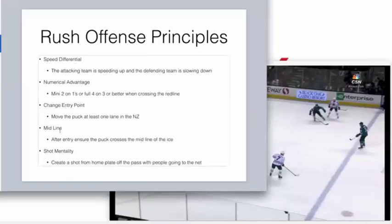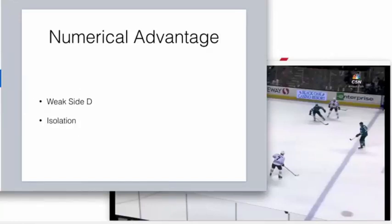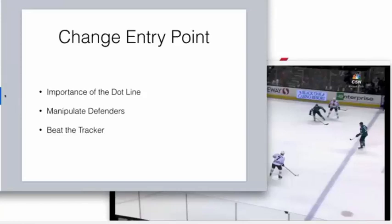So we talked about speed differential and using the stretch guy. Notice that when a guy takes off from the zone, we don't pass to him initially — his job is to push the D back and slow them down. Then we use speed from behind the puck to get that runway. We need to get the D into the rush all the time to create numerical advantages. We also look for isolations of two-on-one entries. The importance of the dot line, and manipulating defenders by switching the side and beating the tracker — we'll look at clips on that.